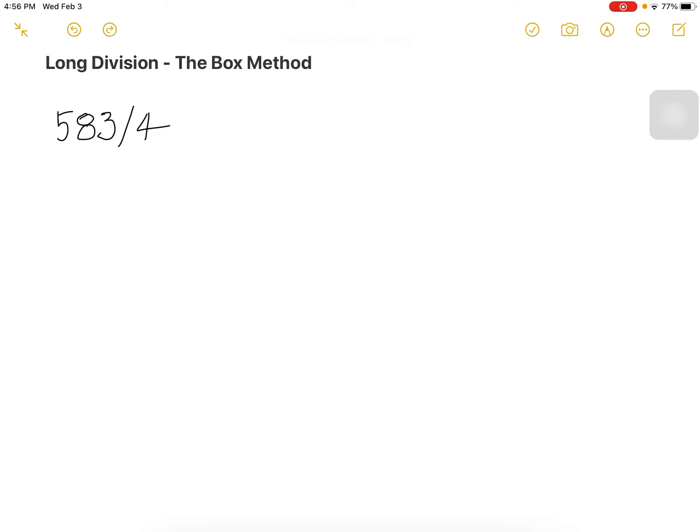Traditionally when we see a problem that is 583 divided by 4, we might see it as this, or we might see it with our bracket divided by 4. I am proposing a fourth way of looking at the problem, and that fourth way is called the box method.